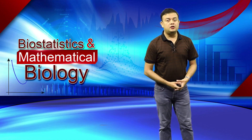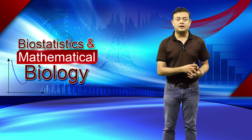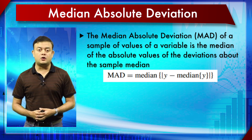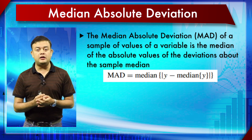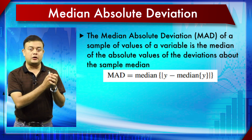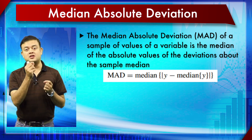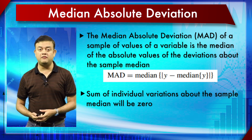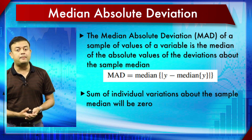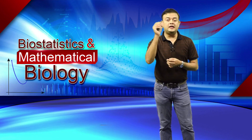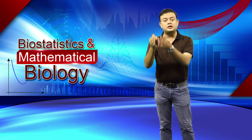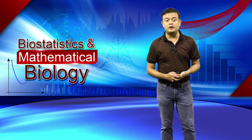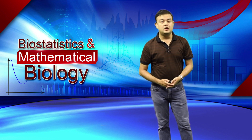Next is median absolute deviation (MAD), which is a non-parametric method, like percentiles and H spread. MAD is the median of the absolute values of the deviations about the sample median. First calculate the sample median, then subtract each value from the sample median, take the absolute value of each result, and then take the median of those absolute values. Taking absolute values avoids the problem of deviations summing to zero.